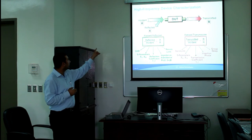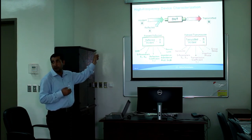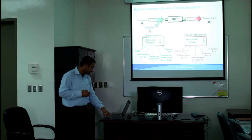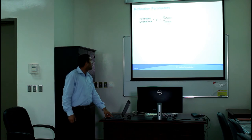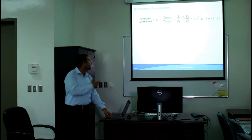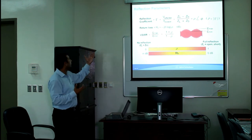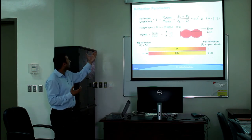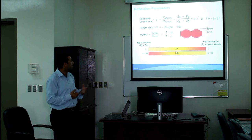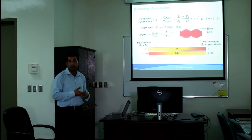Based on transmission and reflection signals, we have transmission parameters and reflection parameters. Here is the mathematical formula to calculate reflection parameters. These are all interlinked. If you know the reflection coefficient — the V-reflected to V-incident ratio — you can calculate all the others. Return loss is the logarithmic form and VSWR is the maximum-to-minimum power reflection ratio.